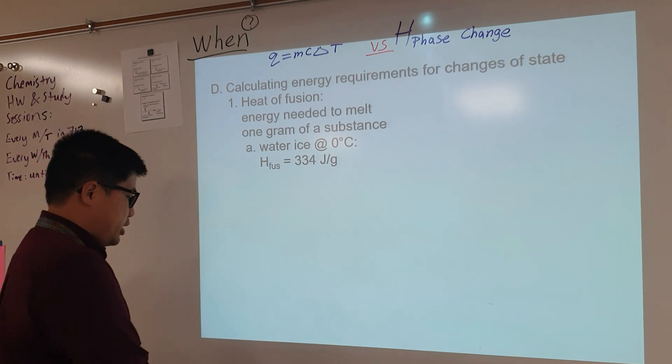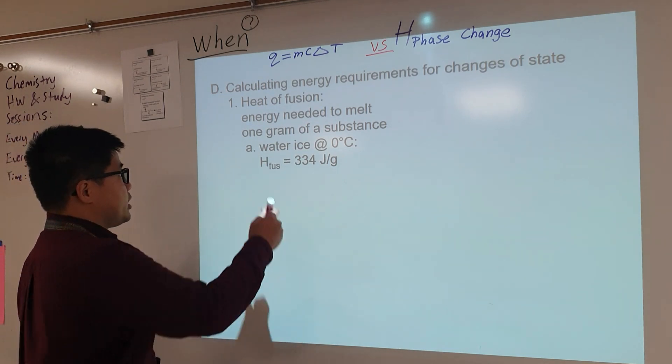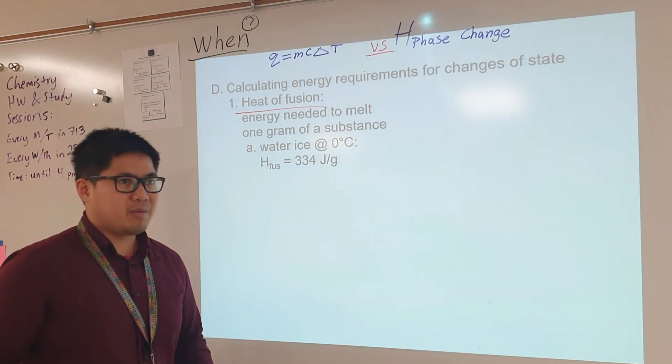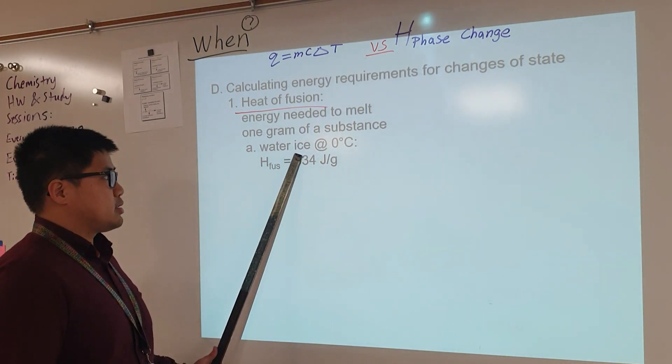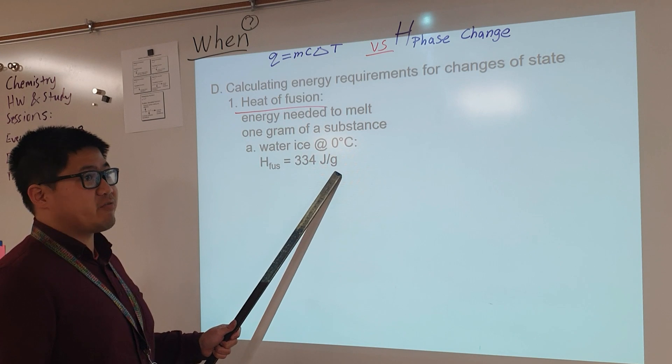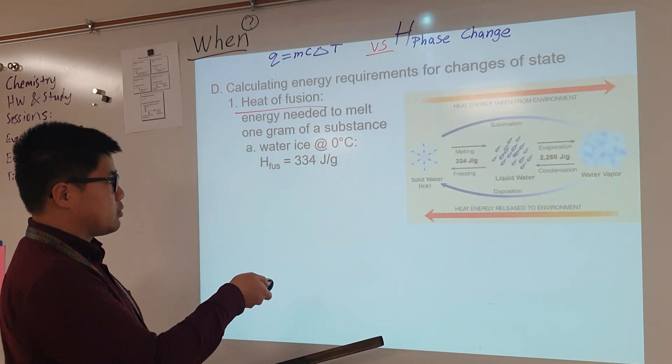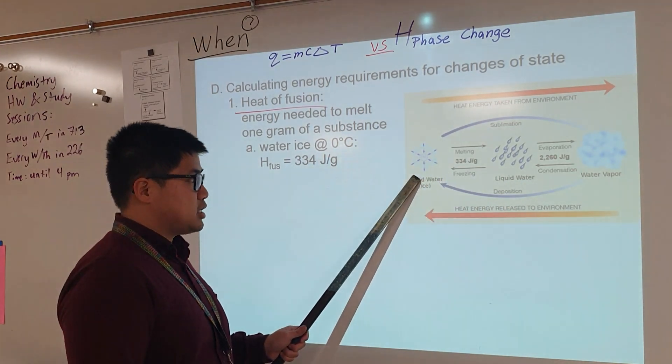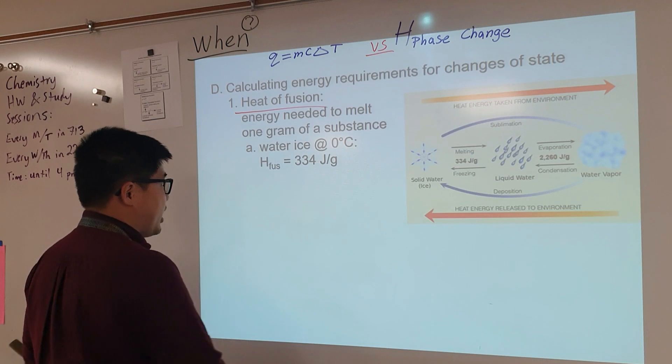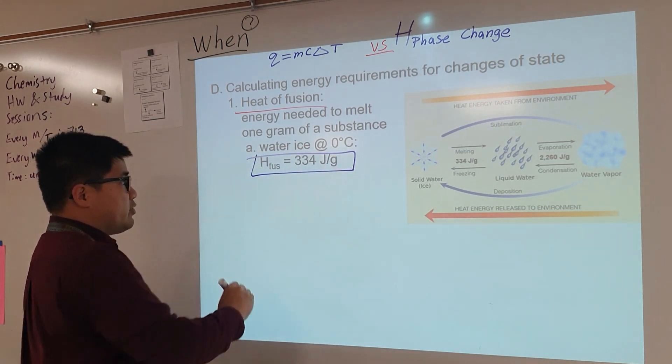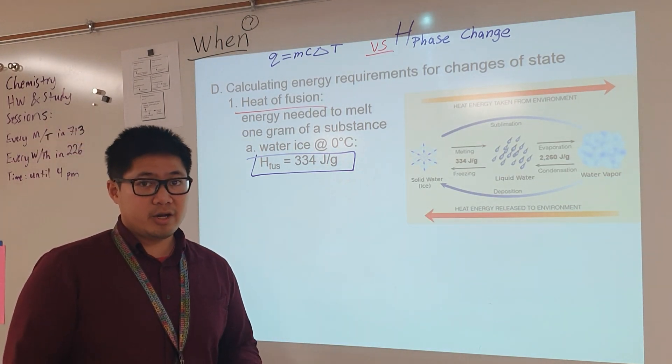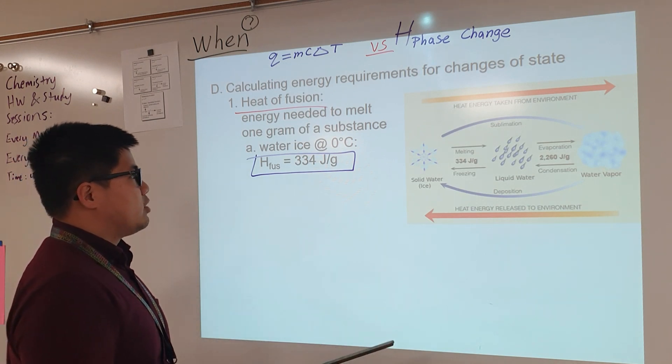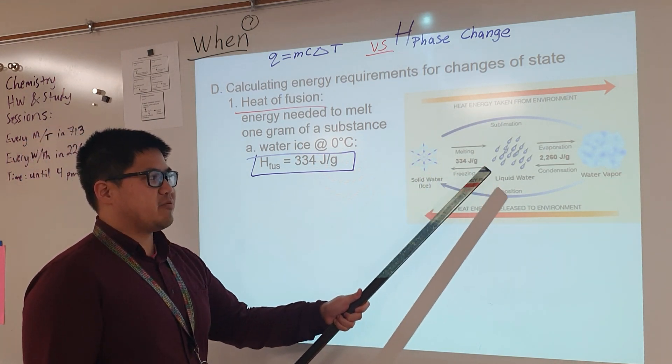We need to understand heat of fusion. Heat of fusion is defined as the energy needed to melt one gram of a substance. For example, water in the form of ice at zero degrees Celsius is going to take 334 joules per gram to either turn from solid water to liquid water or back from liquid water to solid water. That number is going to stay the same, defined as 334 joules per gram.